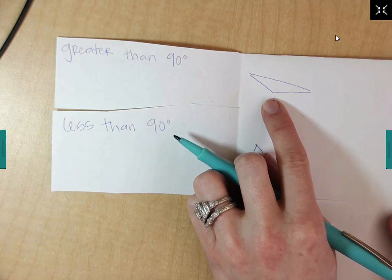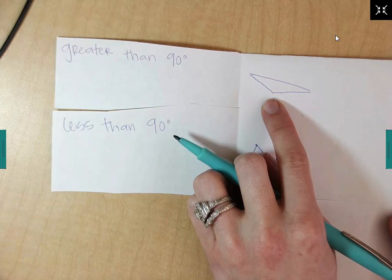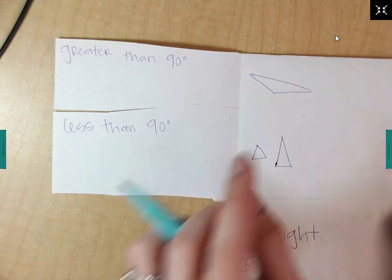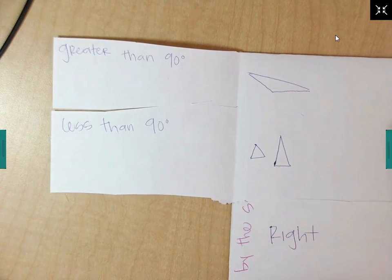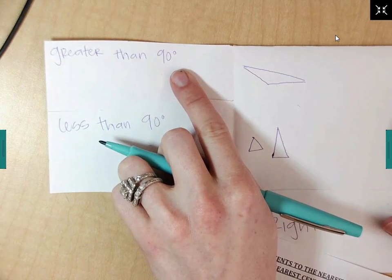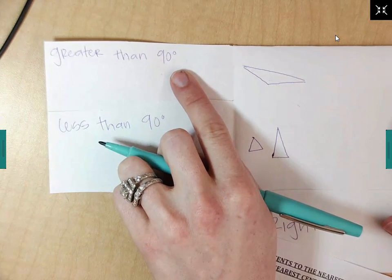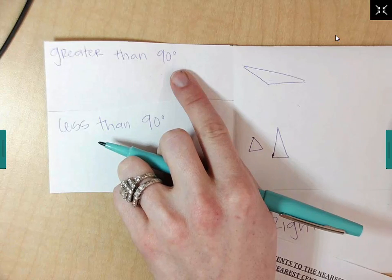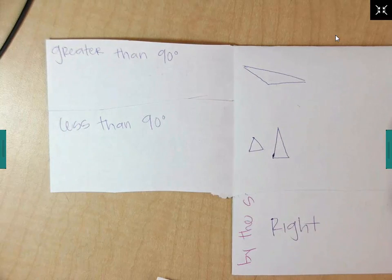Anybody know how many degrees are in a triangle? 180. 180. 180 degrees. So we can't have two angles that are bigger than 90 degrees because then it's not going to be a triangle. It would just be obtuse. It would just be a straight line. It ended up being a straight line.